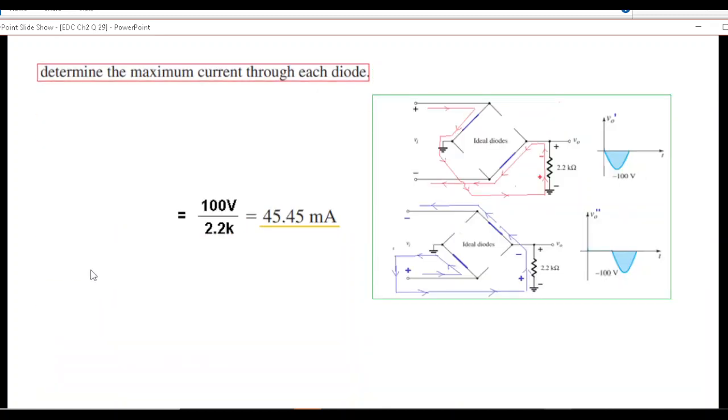Now the third part is determine the maximum current through the diode. You can see the current in both cases is flowing through the diode, but at the same time current is also flowing through the resistor. So if you can calculate the current through the resistor that will be the current through the diode. We can calculate the current through the resistor by means of V over R. The current I max equals V maximum over R equals 100 volts divided by 2.2k, which is 45.45 milliamperes. So that is the maximum current flowing through the diode. I hope you have been able to follow this. Thank you.